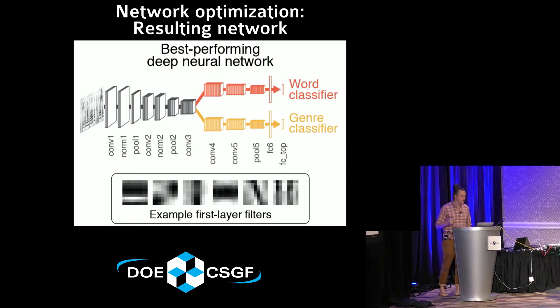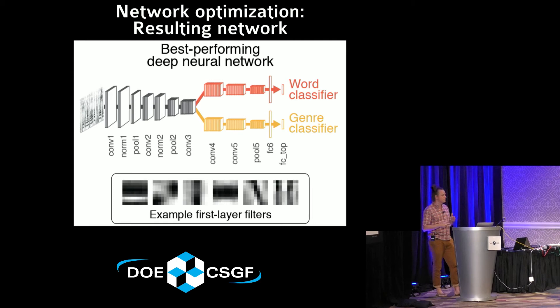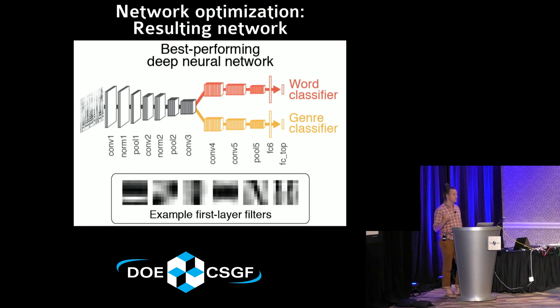Here's our resulting network, sharing these first few stages before branching into two task-specific pathways. This multi-task pathway learning is really an innovation of the project — you can imagine this approach being a useful tool to generate hypotheses about the functional organization, both the segregation and integration of processing in the brain, for tasks like speaker identification or sound localization.